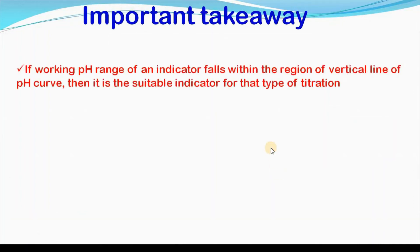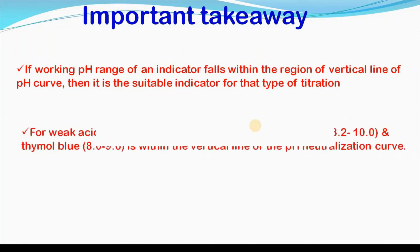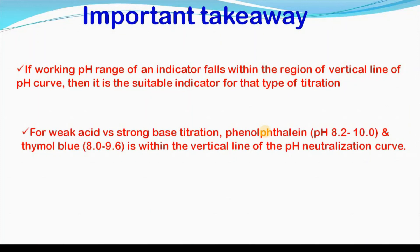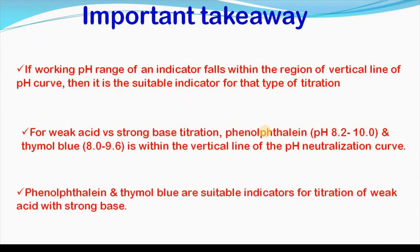The major takeaway is: if the working pH range of an indicator falls within the region of the vertical line of the pH neutralization curve, then it is a suitable indicator for that type of titration. For weak acid versus strong base, phenolphthalein and thymol blue are within the vertical line, and therefore are suitable indicators.